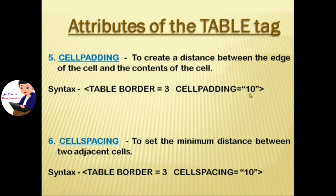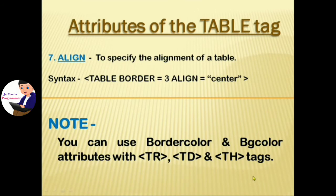Next: cellspacing — used to set the minimum distance between two adjacent cells. The syntax is: table border, then cellspacing equal to any number within double quotes. Next: align attribute — used to specify the alignment of a table. If you want to show your table at the center of the page, use the align attribute with the value center.